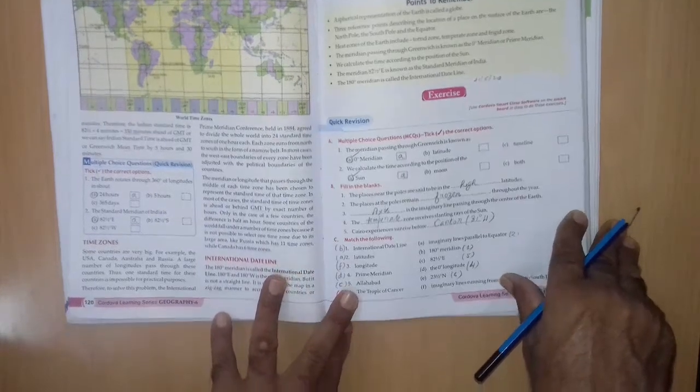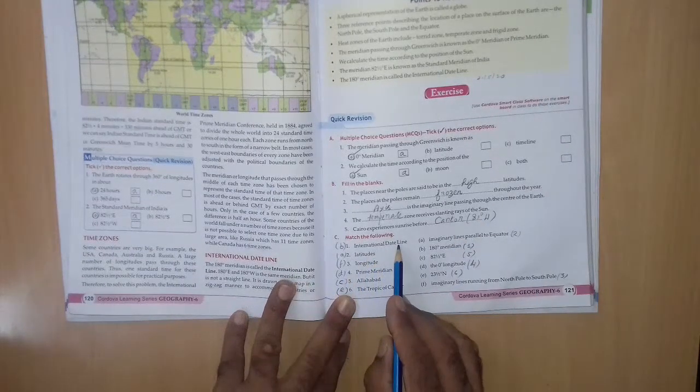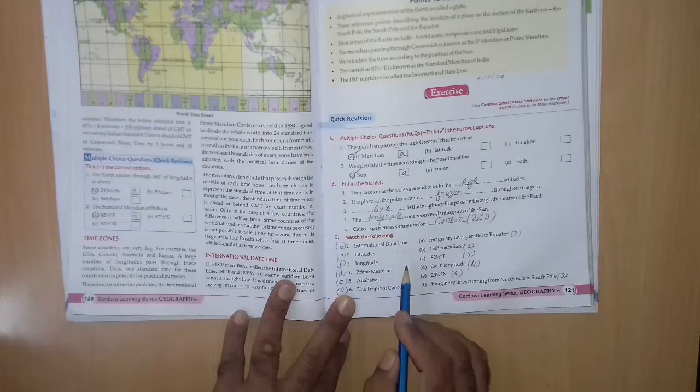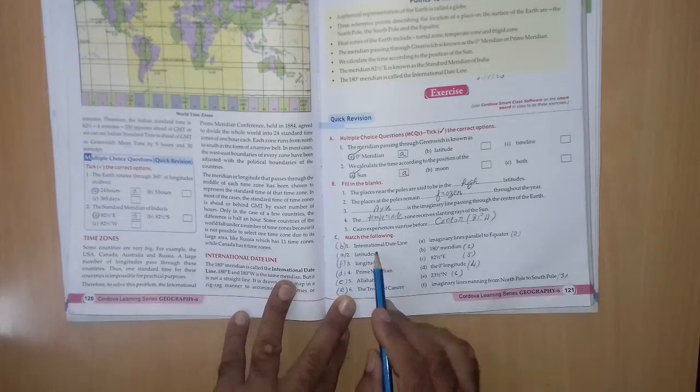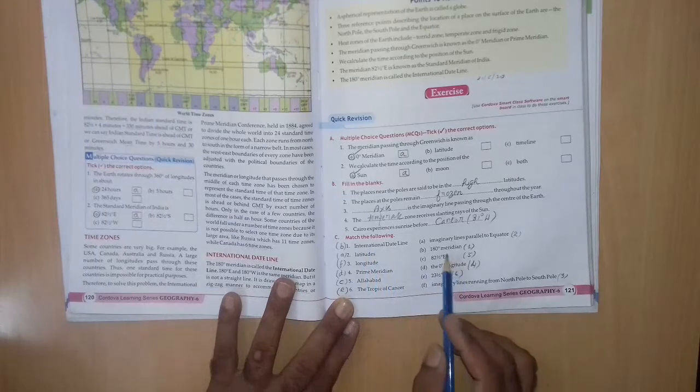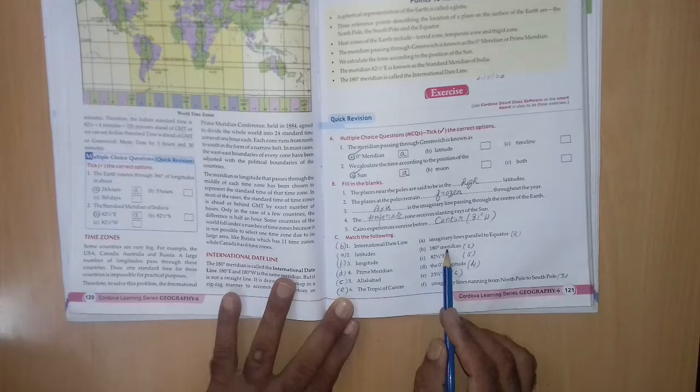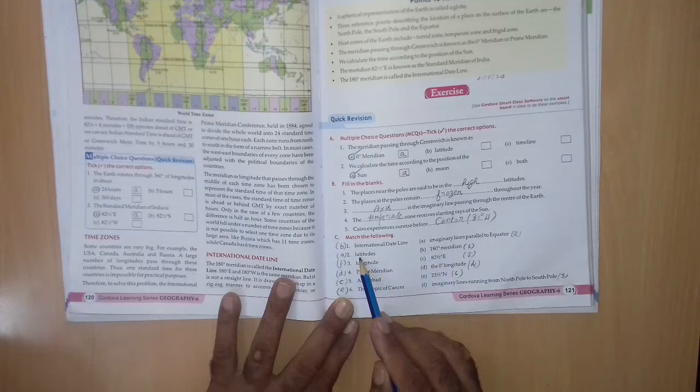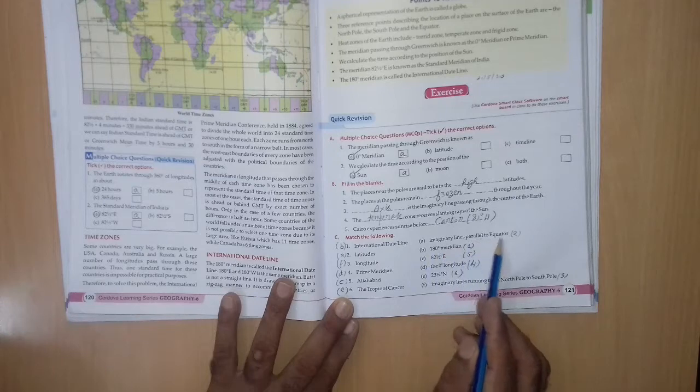C match the following. A, international date line. So, it will be, we have to match international date line. It is 180 degree meridian. B, 1st, B. 2nd, latitude. Latitude, it is A, imaginary lines parallel to the equator.